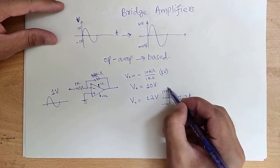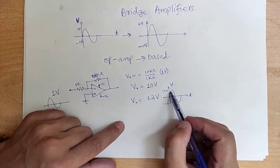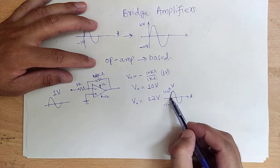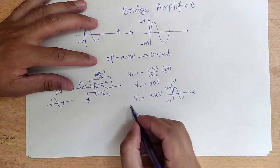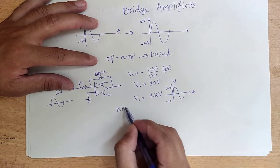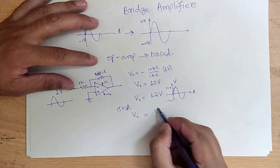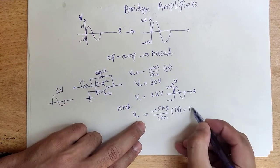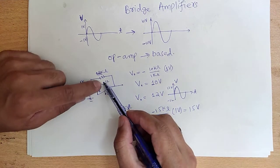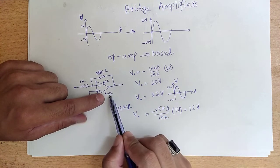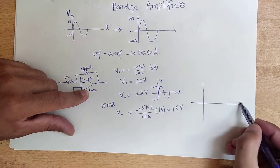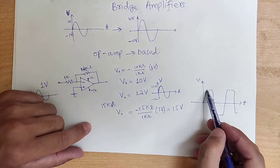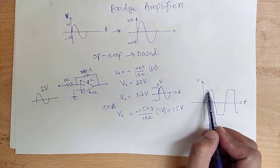What if we want a higher output signal? If we increase the feedback resistor to 15 kilo-ohm, the calculated output would be 15 volts. However, since our positive and negative supply rails are only ±12 volts, the op-amp output will saturate. We won't get a pure sinusoidal signal — the op-amp will clip. So we cannot exceed the supply voltage with a single op-amp.